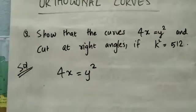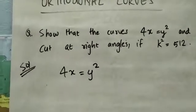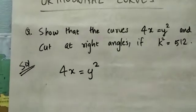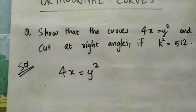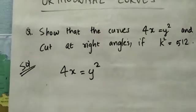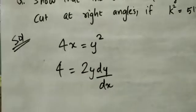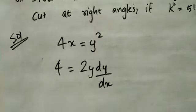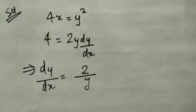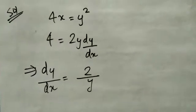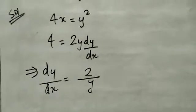To solve, take the first curve 4x = y² and differentiate with respect to x. That gives dy/dx = 2/y.